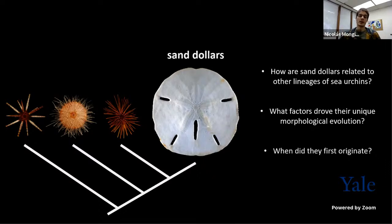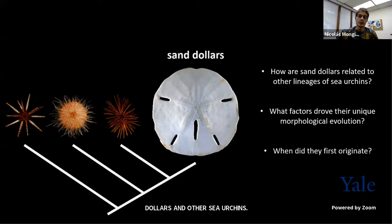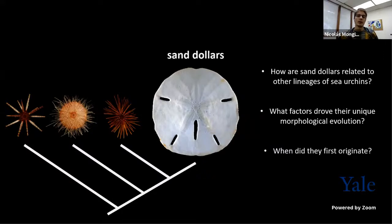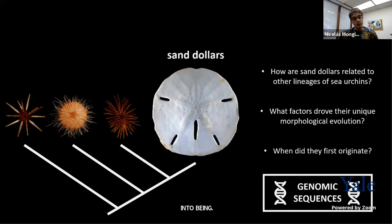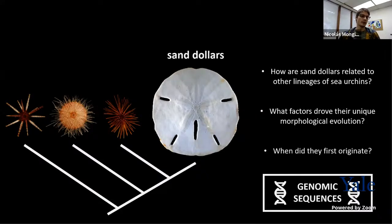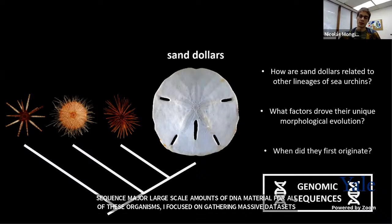We'll focus first on explaining the phylogenetic relationships between sand dollars and other main lineages of sea urchins. Once we have constrained the phylogenetic history, we'll narrow down into the factors that likely drove their unique morphological evolution, and try to understand better when in geological time they first originated. For that, I focused throughout my dissertation on gathering genomic sequences for all major lineages of sea urchins, using recent developments that gave us the capacity to sequence large-scale amounts of DNA material, gathering massive datasets of molecular data and comparing those sequences to infer the underlying phylogenetic history.